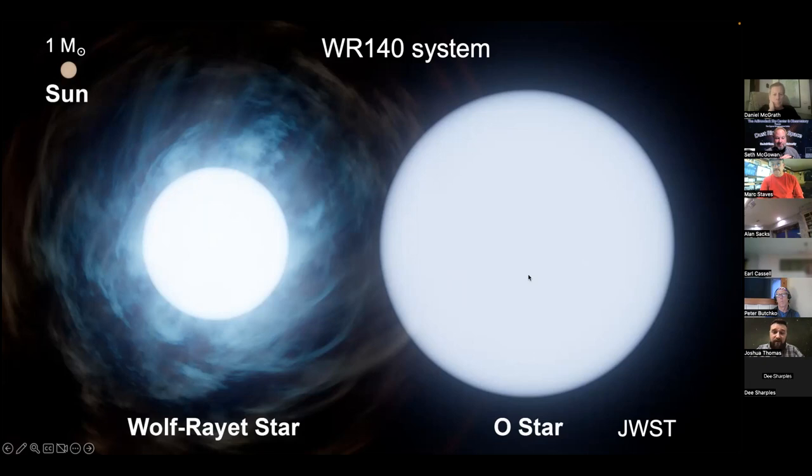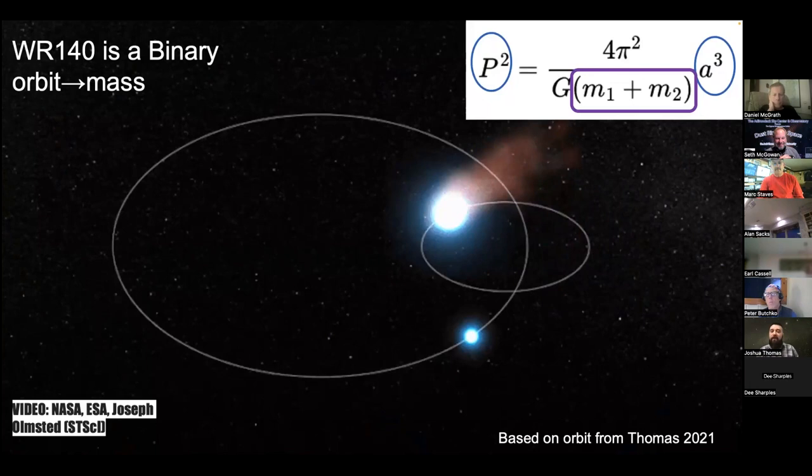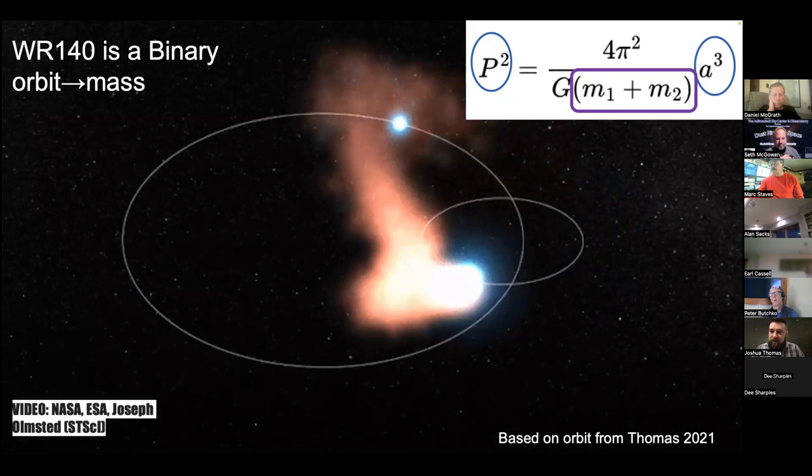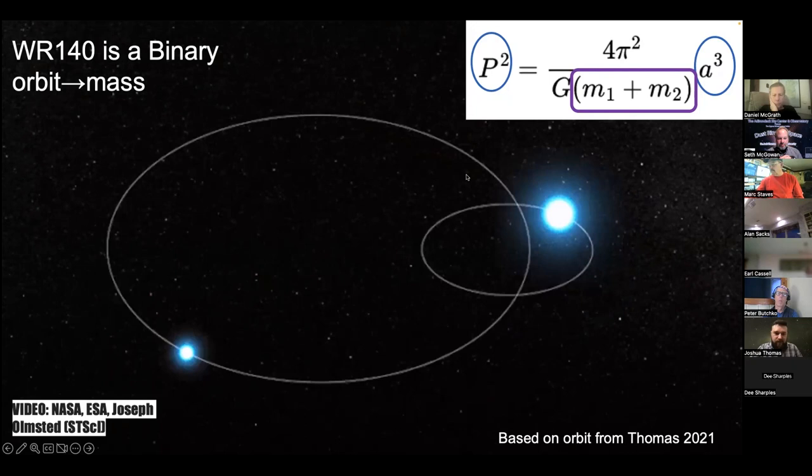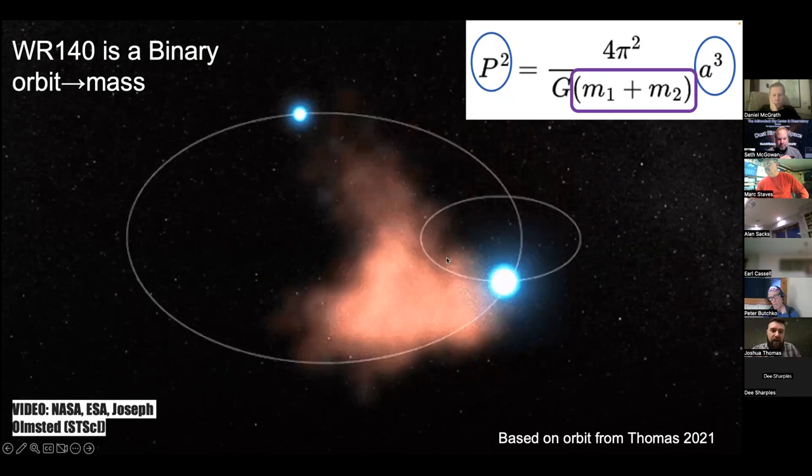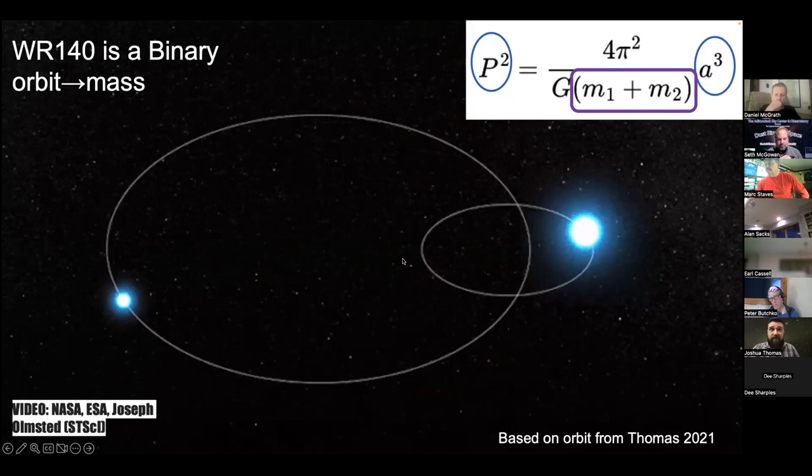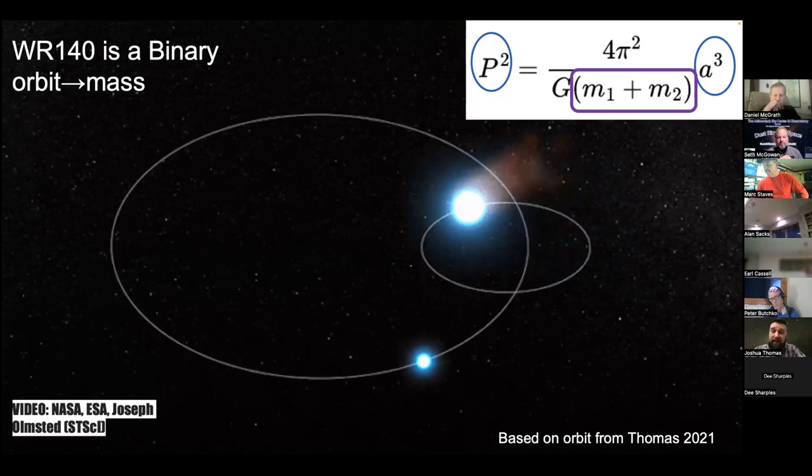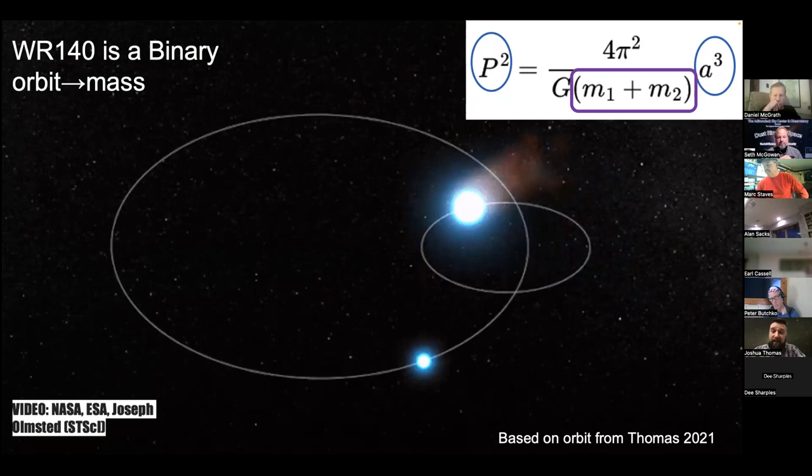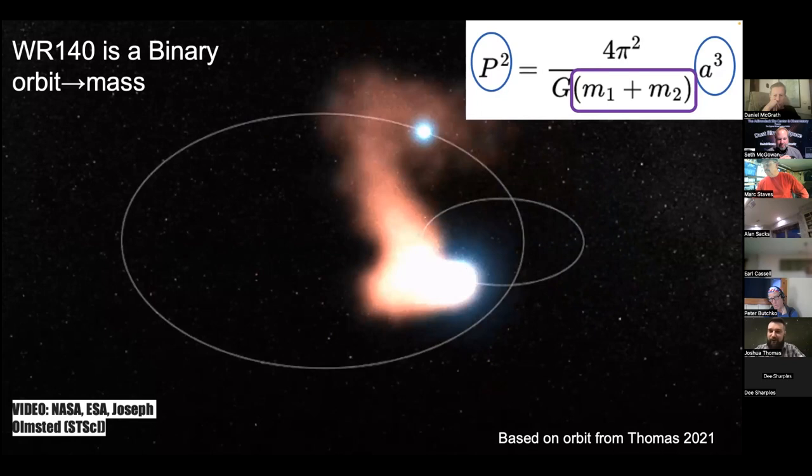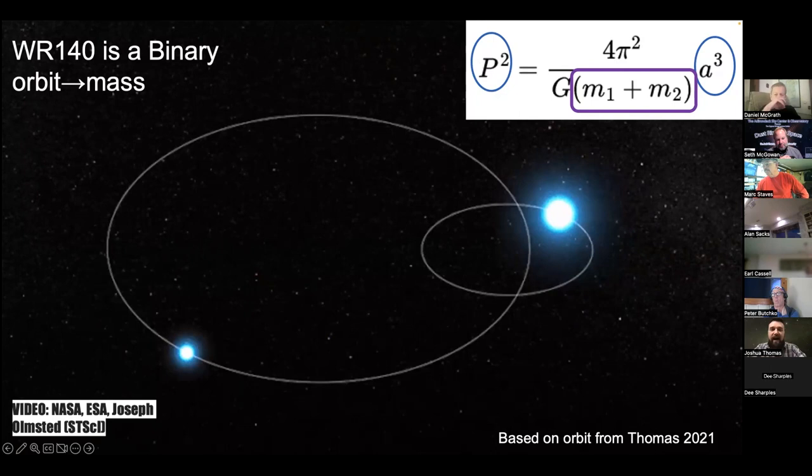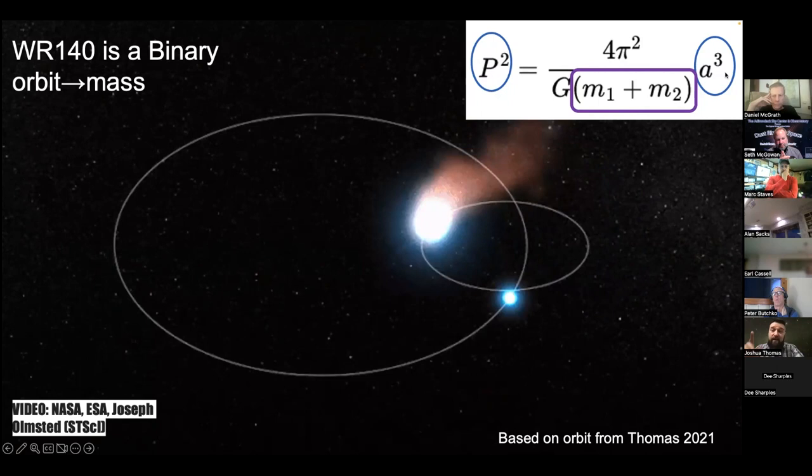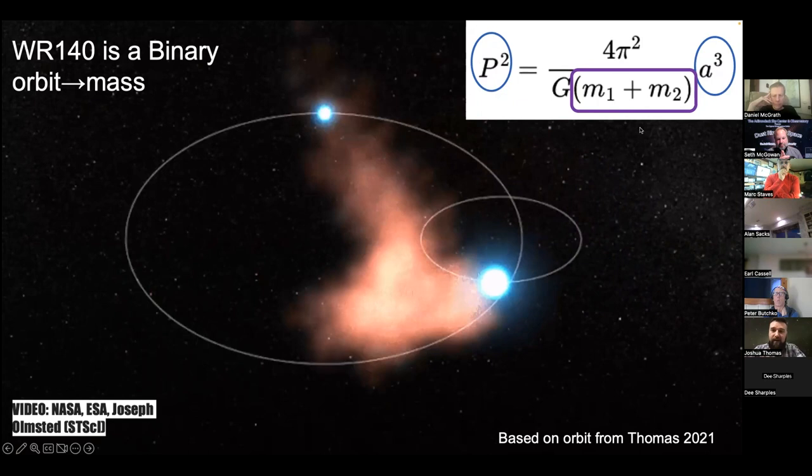Two stars orbiting each other. Here's a nice little model. This is WR-140. The smaller one here on the bigger orbit is our star of interest, the Wolf-Rayet star. The larger circle is the O star, the currently more massive star. When they get close together, the animation does some other things. There's some red stuff coming off. That's what's going to form our dust rings. If you can measure how long it takes to orbit, that's the period P. If you can measure how far apart they are, that's the A. You could use Kepler's laws to get the masses.